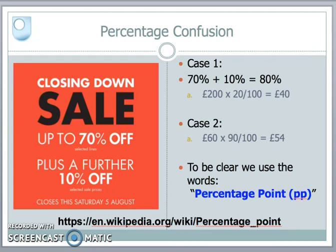There's a difference of £14 between the two cases, so it's important to be very clear how we are using these percentage points and to get the terminology correct. If the 10% applies to the original 70%, we call that a percentage point change — the 70 goes to 80. If we just see the words 'percentage change' or 'percentage', it comes off the new value after the original percentage has been applied. In this case the shop was upfront by stating 'a further 10% off selected sale prices' in small print, telling us the 10% is applied to the sale price.